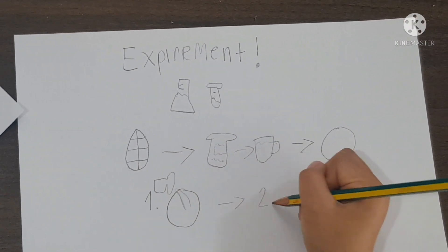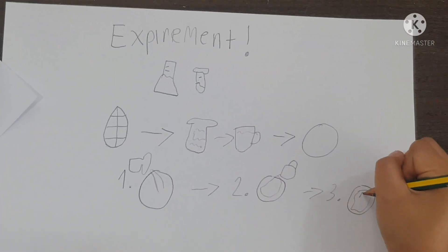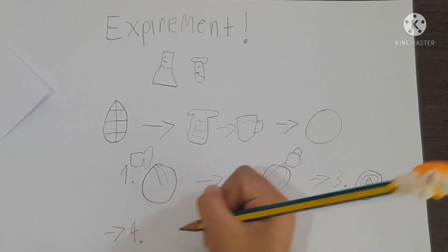Okay, pour the plaster of Paris into the plate. Then, pour the water in. And you can mix it up. And then put the leaf.